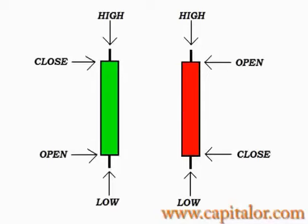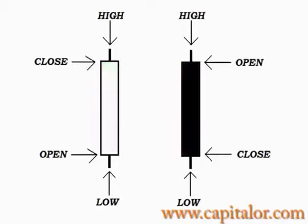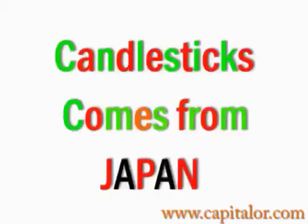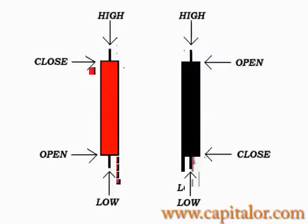In my explanation of how candlesticks are constructed, I have used the colors green and red. But on many platforms the default is white and black — if a candlestick goes up and closes up it will be white, and if it is going down and closes down it will be black. Candlesticks come from Japan, and in Japan the default colors are red and black — red when a candlestick goes up and closes up, and black when a candlestick goes down and closes down.